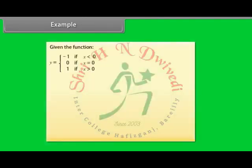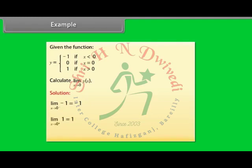Given the function y = -1 if x < 0, y = 0 if x = 0, y = 1 if x > 0. Calculate limit x→0 of y(x). Solution: Limit x→0⁻ of -1 is -1. Limit x→0⁺ of 1 is 1. Since the left-hand and right-hand limits are not equal, the function has no limit at x = 0.